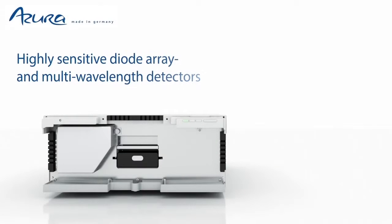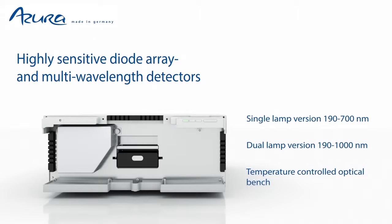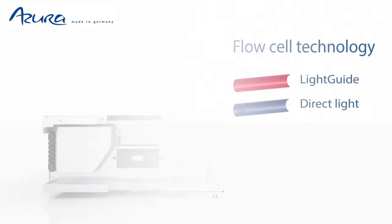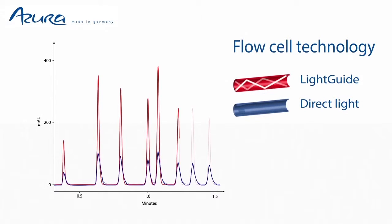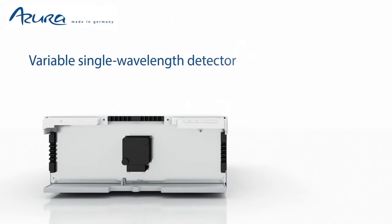We provide a choice of UV-VIS detectors ranging from single variable wavelength to 8 channel diode array detectors with light guide total reflection technology. The standard light guide flow cell cartridge combines total reflection technology with a small cell volume and sensitive high throughput and high resolution detection.